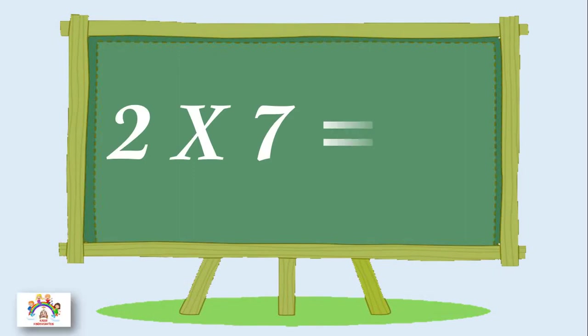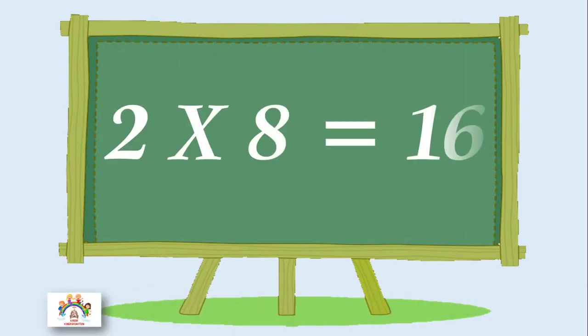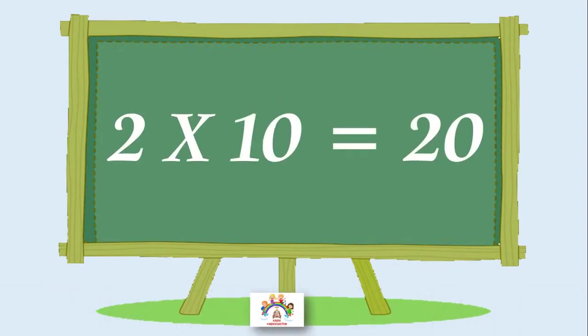Two sevens are fourteen, two sevens are fourteen. Two eights are sixteen, two eights are sixteen. Two nines are eighteen, two nines are eighteen. Two tens are twenty, two tens are twenty.